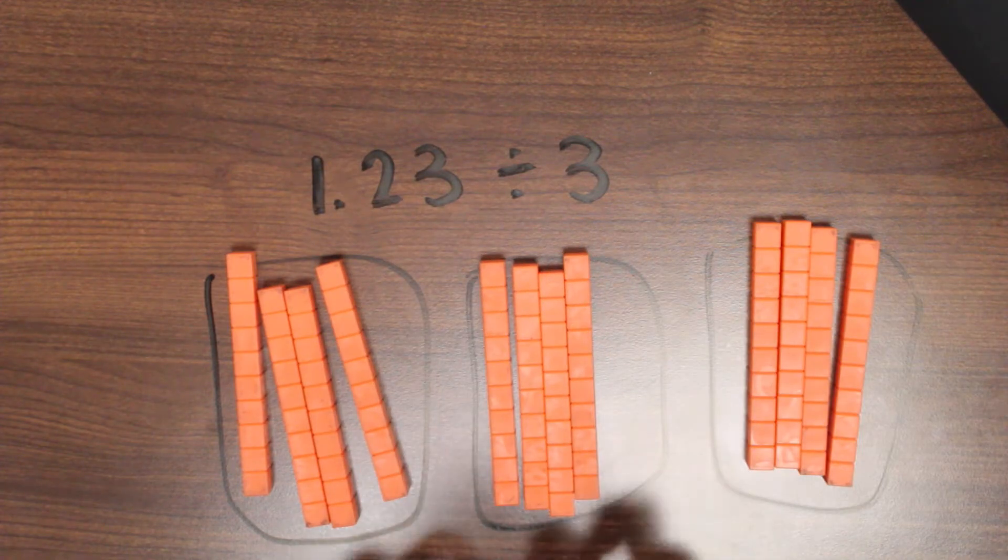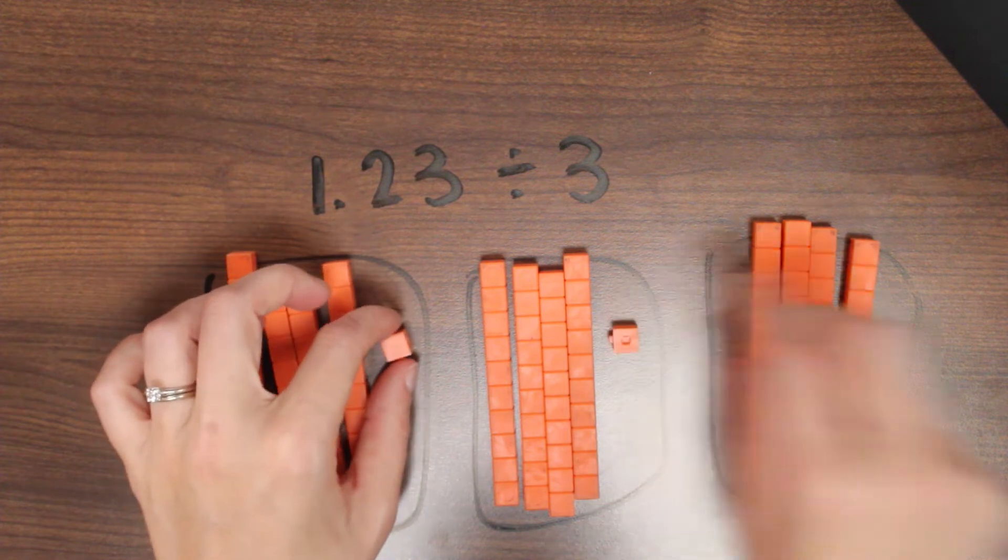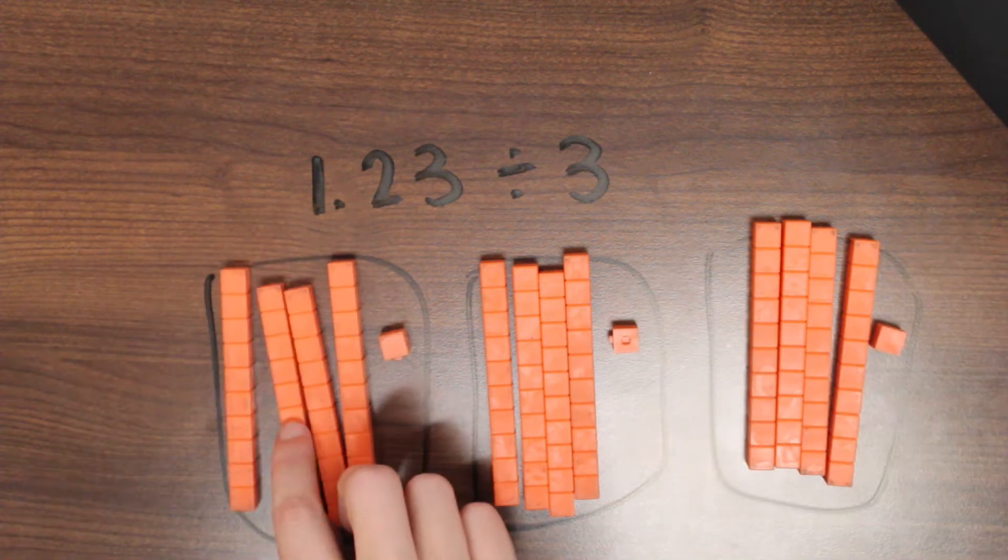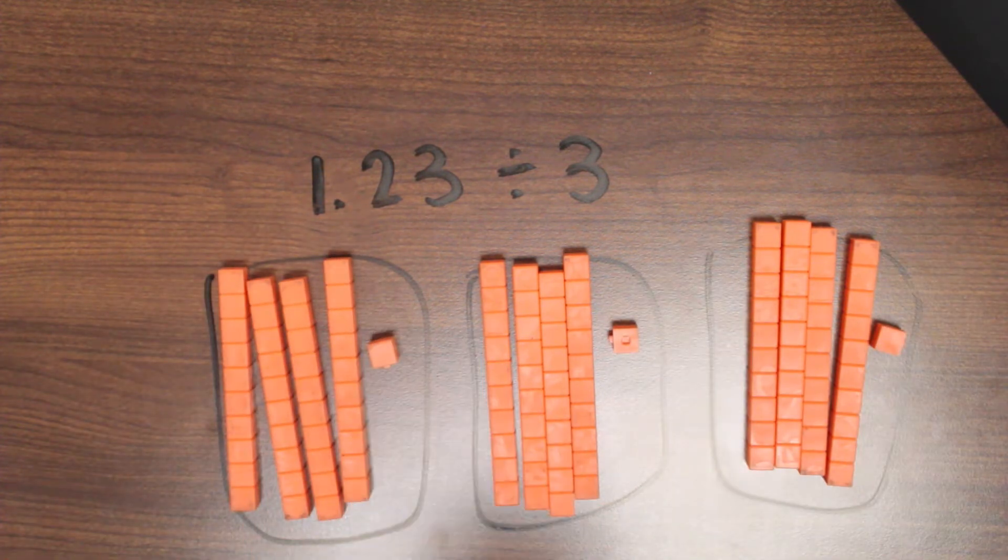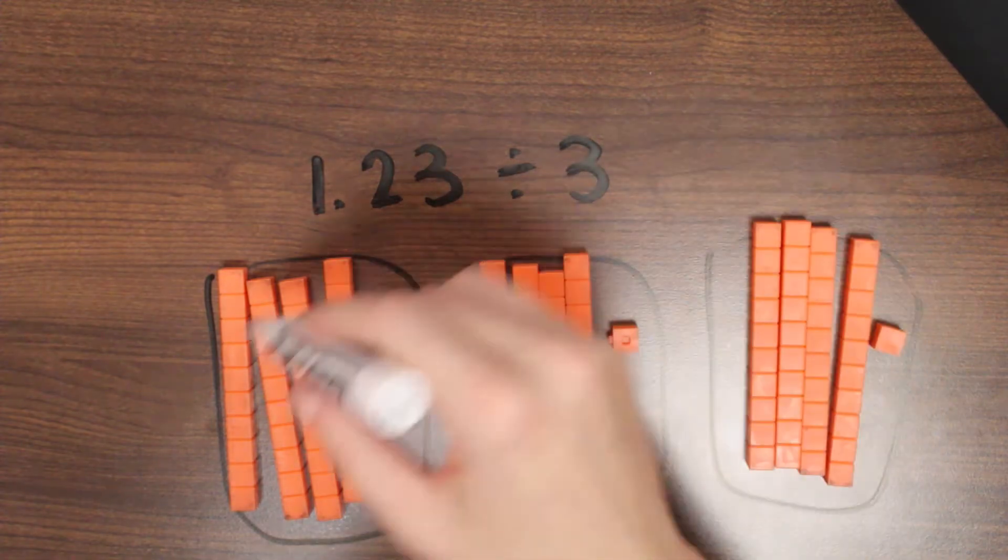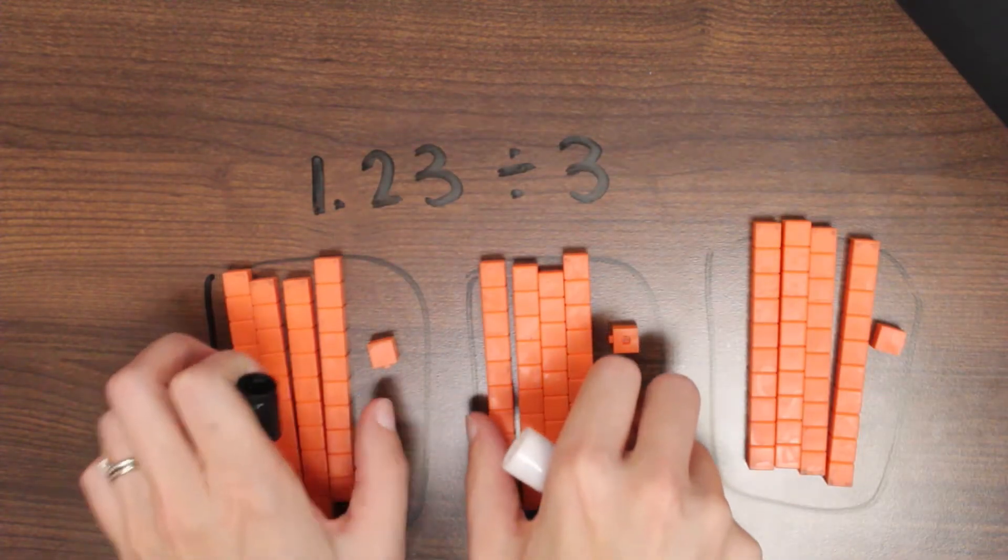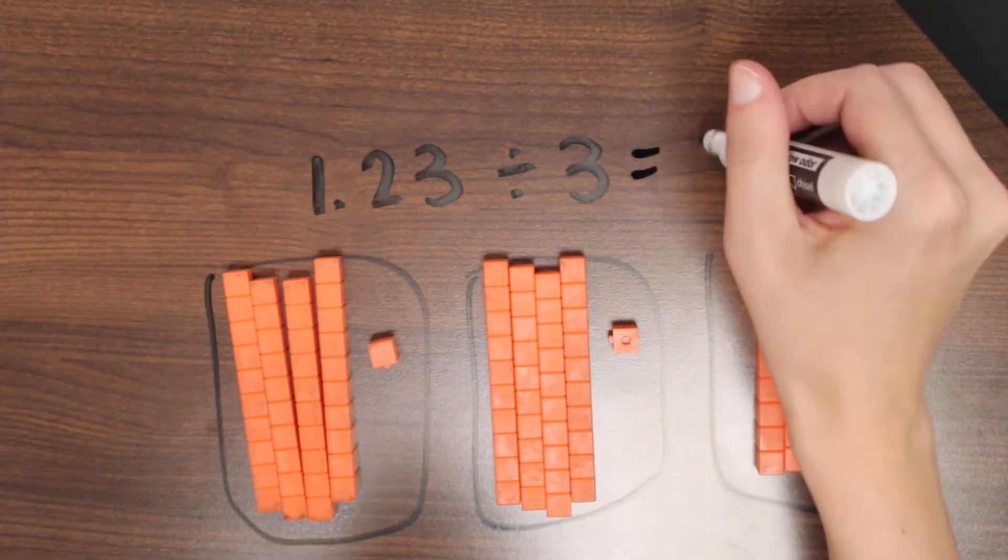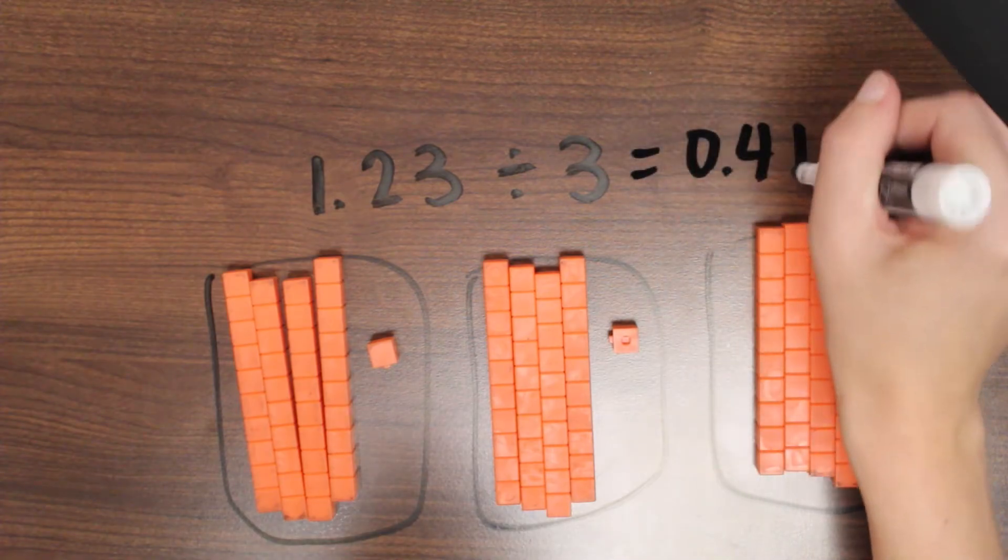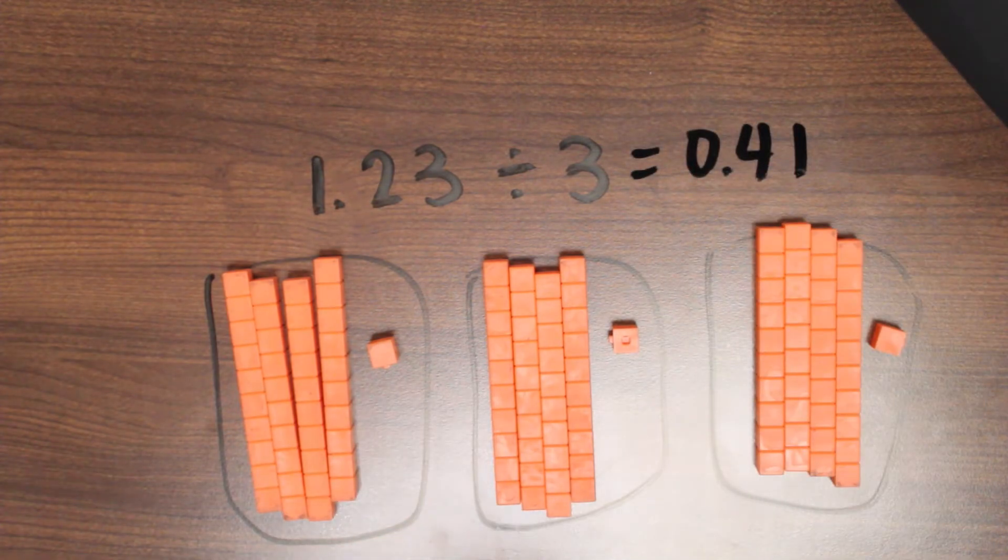And now I have my little onesies left, just like I had my pennies left when I did money. And I end up with 10, 20, 30, 40 hundredths, just like before. So one and 23 hundredths split into three groups gave me 41 hundredths in each group.